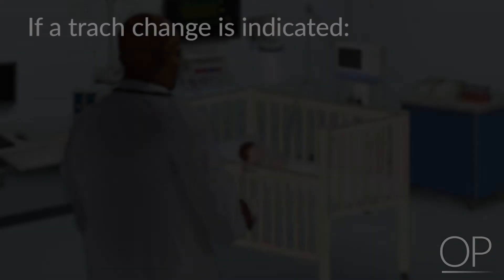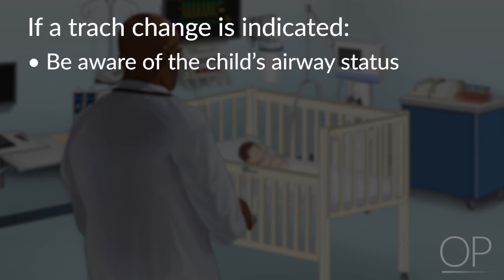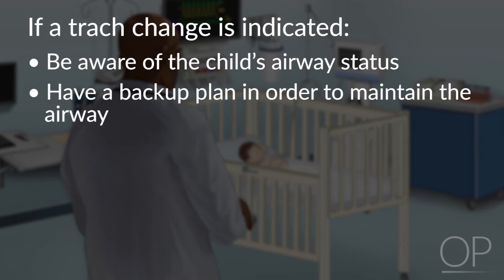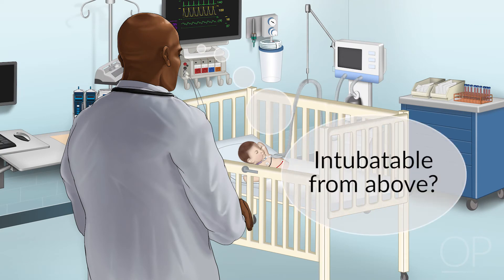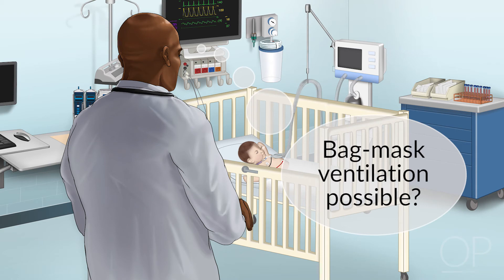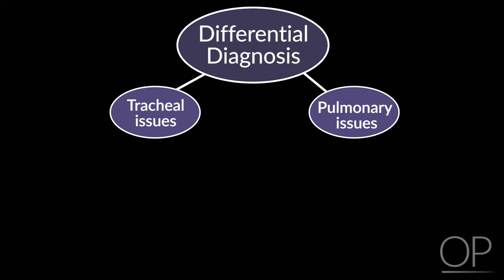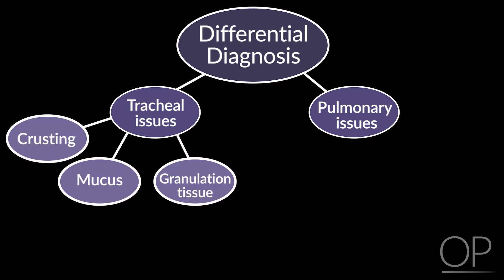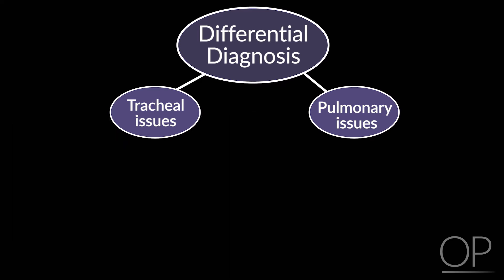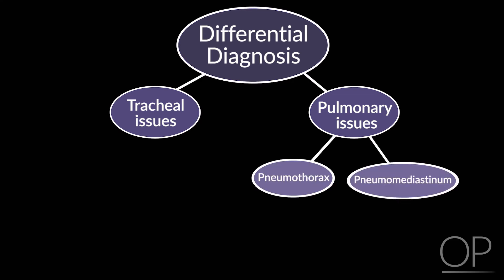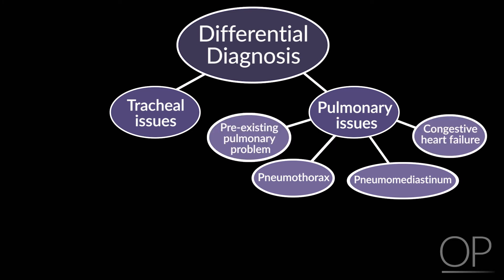Point of clarification: if the tracheostomy tube is to be changed, be aware of the child's airway status and have a backup plan in order to maintain the airway. Determine whether the patient is intubatable from above, if bag mask ventilation is possible, and if you can intubate with an endotracheal tube through the stoma. If the tracheostomy tube itself is okay, the issue may be in the trachea or below. Problems with the trachea may include obstruction from crusting, mucus, granulation tissue, or tracheomalacia, but you should also consider problems below the trachea in the lungs themselves. Pneumothorax or pneumomediastinum should be considered in patients with recently inserted tracheostomy tubes or patients with high ventilatory pressures. Exacerbation of a pre-existing pulmonary problem or congestive heart failure in a cardiac patient may also occur and should be worked up in the usual manner.